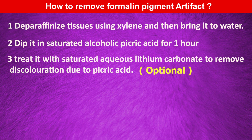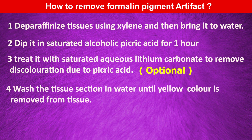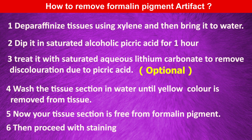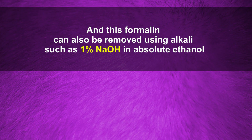The lithium carbonate step is optional. After picric acid treatment, wash the tissue section in water until the yellow color is removed from the tissues. Now your tissue section is free from formalin pigment. Then proceed with staining. Formalin pigment can also be removed using an alkali such as 1% sodium hydroxide in absolute ethanol.